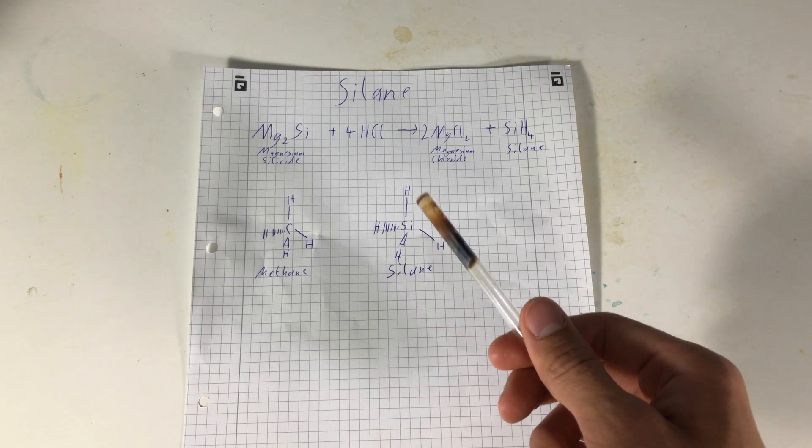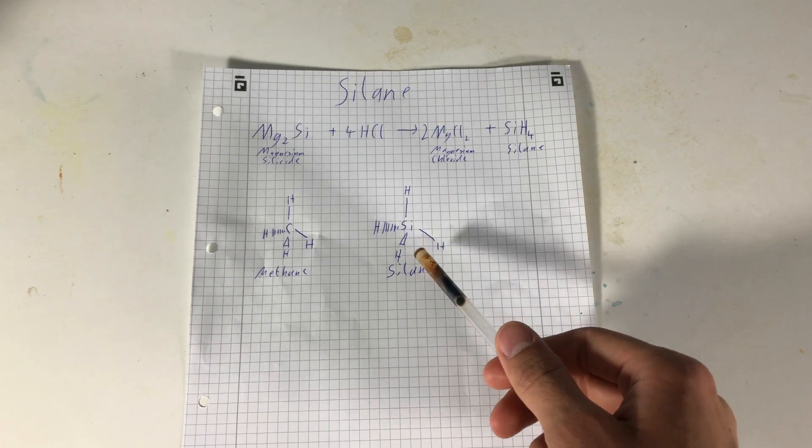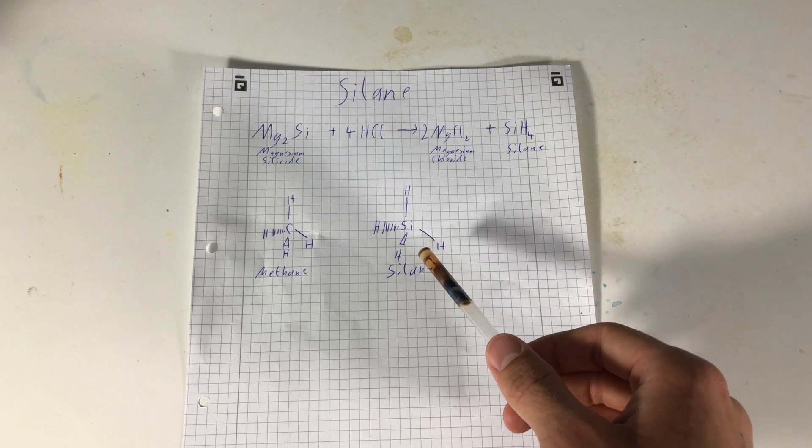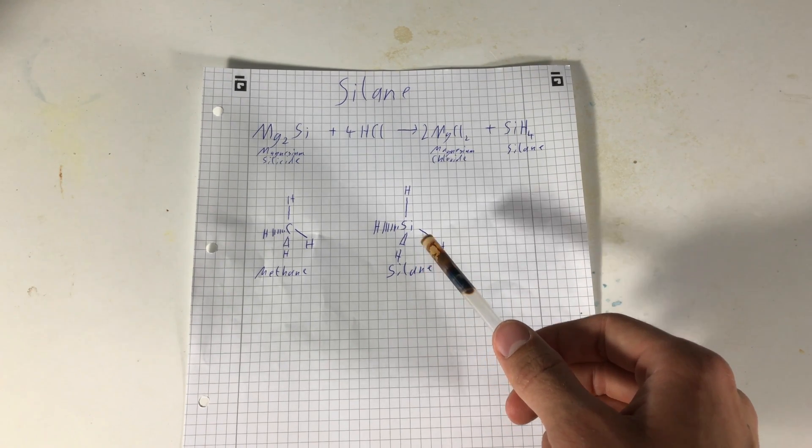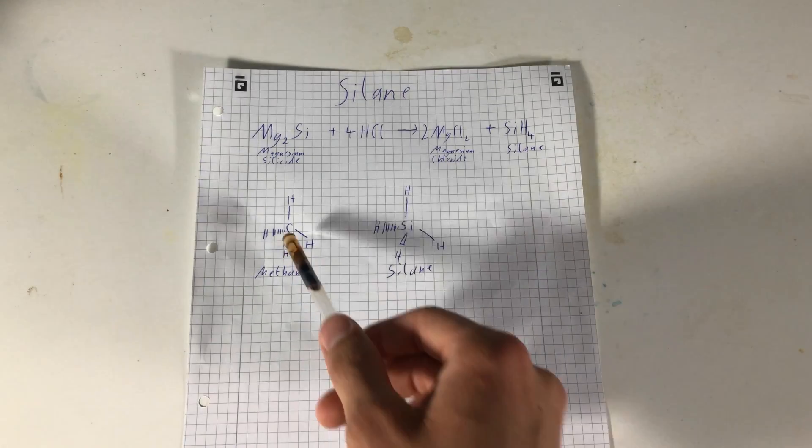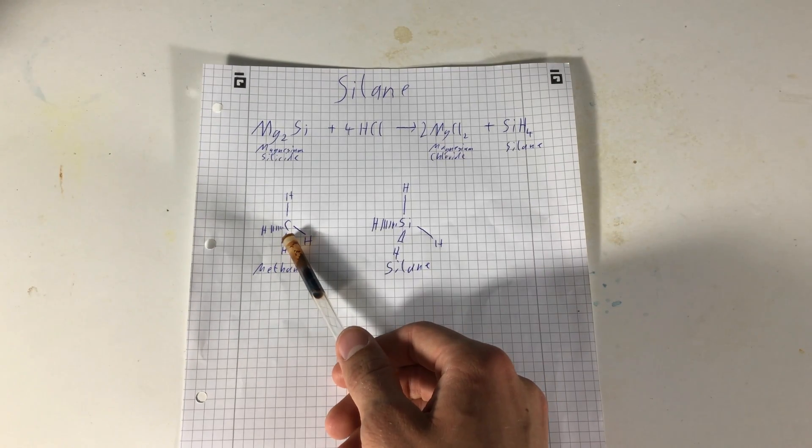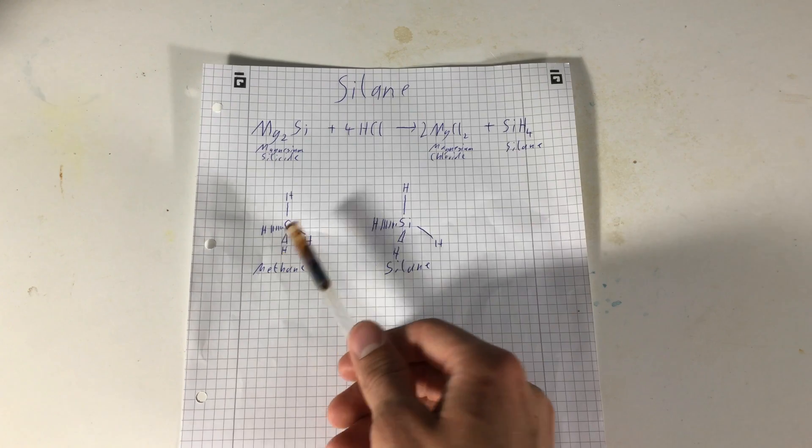Silane is pyrophoric and when it burns, water and silicon dioxide will be the products of this reaction. This here is methane. Methane has actually a pretty similar chemical structure to silane, but the silicon atom is swapped with a carbon atom.